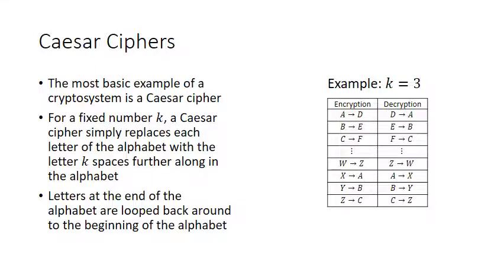Let's talk about the most basic type of cipher. This is called a Caesar cipher, and it's called that because Caesar supposedly used one. For a fixed number K, a Caesar cipher replaces each letter of the alphabet with the letter that is K spaces further along in the alphabet.